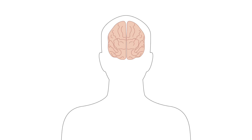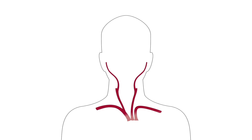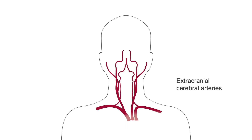The brain receives blood from four arteries, including the left and right internal carotid arteries and the left and right vertebral arteries. Other arteries, such as the innominate artery, subclavian arteries, common carotid arteries, and external carotid arteries, supply blood to the head, neck, and upper extremities. The term extracranial cerebral arteries refers to all of the arteries carrying blood up from the heart to the base of the skull.